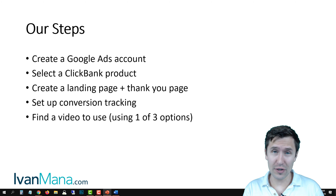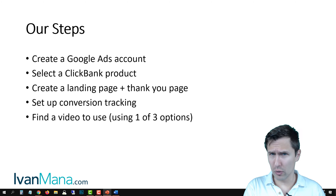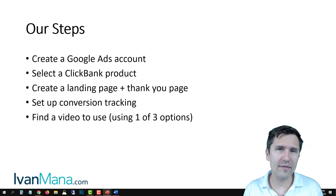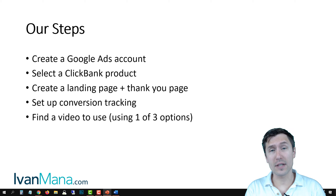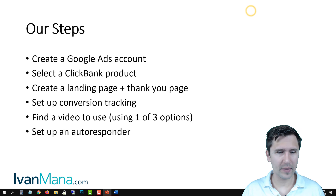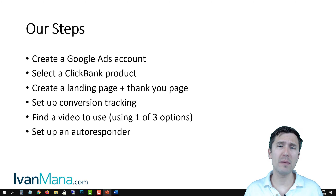We will then find a video to use — a video is basically going to be our ad when using YouTube ads. There are at least three approaches we'll be covering here that you can use to create or have videos ready to use. We'll go through them and use one of the approaches to create our video. Next we're going to set up an autoresponder so we can send out emails. Nowadays you have to build trust, so sending out emails with information and value is the way to go.